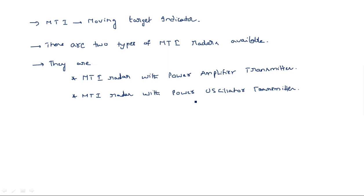The receiver part is almost the same in both types, because the receiver must have a mixer to mix the received signal with the transmitting signal, to get the difference between the transmitted signal and the received signal and find what is the Doppler frequency shift. In the transmitting section of MTI radar with power amplifier transmitter, the signal is generated internally, amplified, and then transmitted.